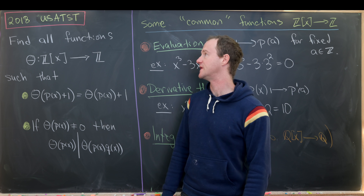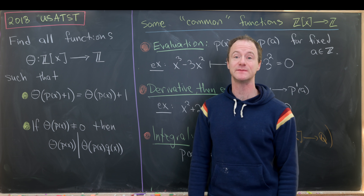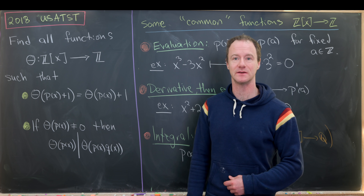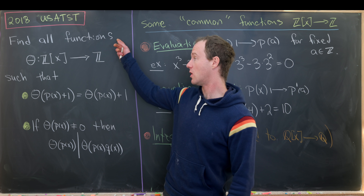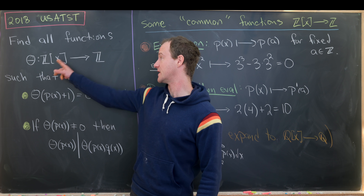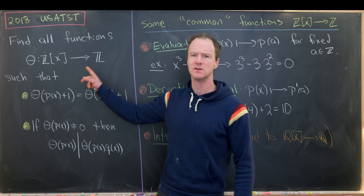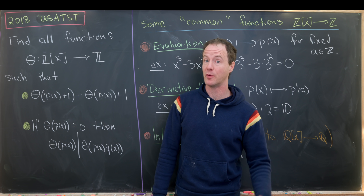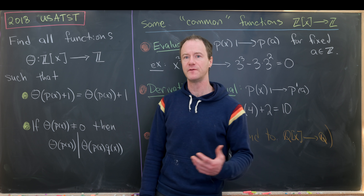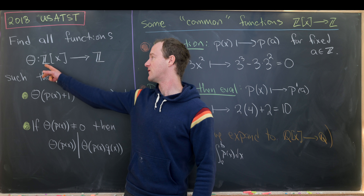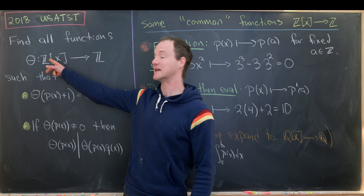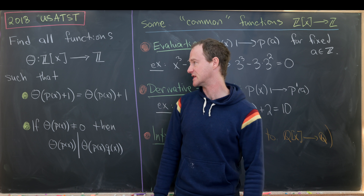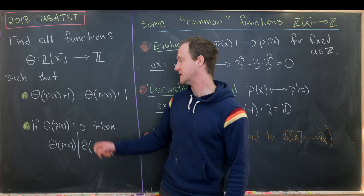Here's a nice unique function problem from the USA team selection test for the Math Olympiad, year 2018. Our goal is to find all functions θ from Z[x] to Z — that is, polynomials with integer coefficients — so we're finding a function that takes a polynomial as input and gives a number as output. This function has to satisfy two conditions.